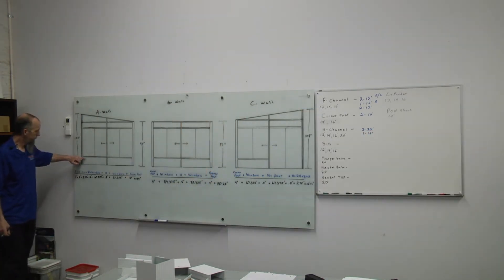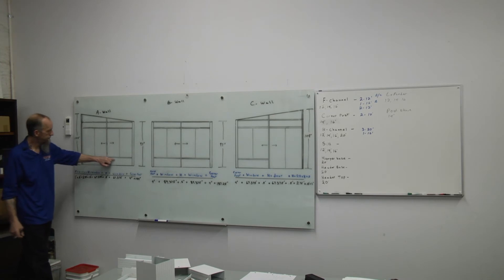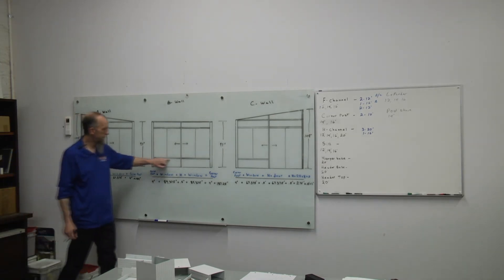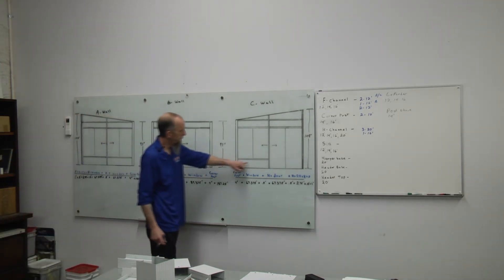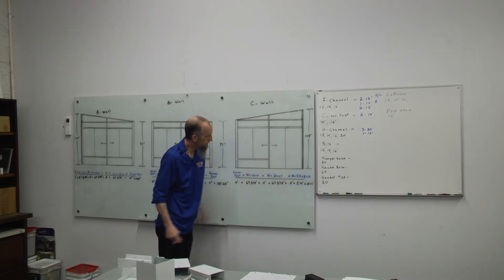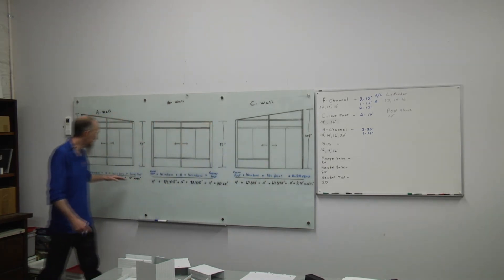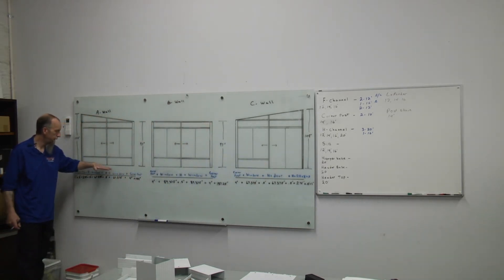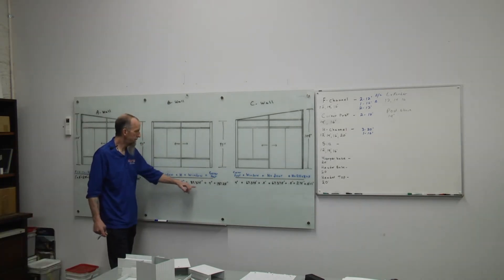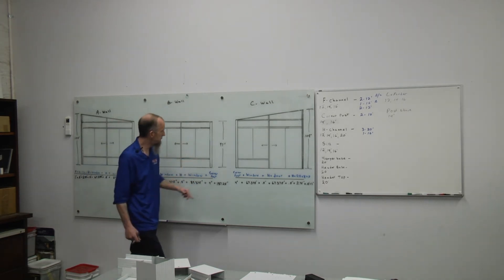Our sill will be running under the window units and under the door unit there. So we have a 12 foot A wall. A 12 foot piece of sill will give us those two pieces. A 16 foot piece will give us our two pieces for our B wall.